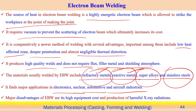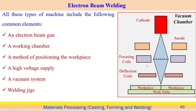The major disadvantage is very high equipment cost, and the weld joints produced are also costly. Additionally, electron beam welding produces x-ray radiation, which is another significant problem associated with the process.